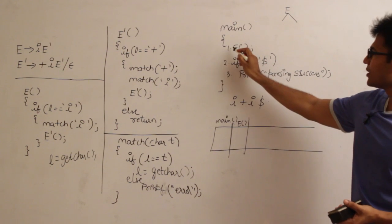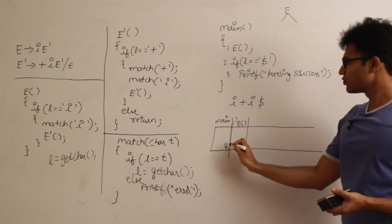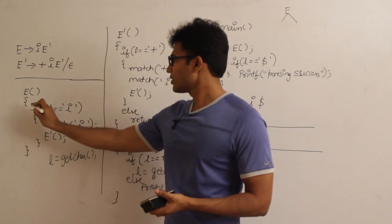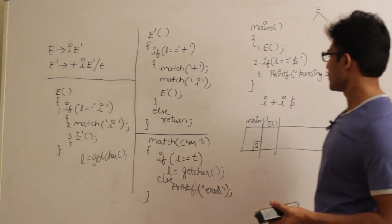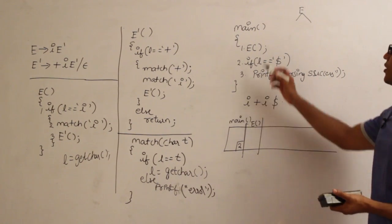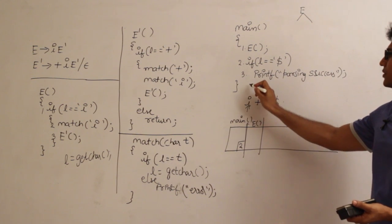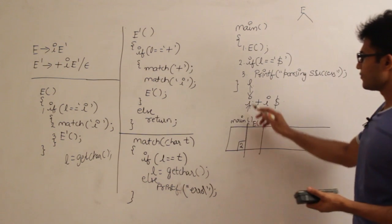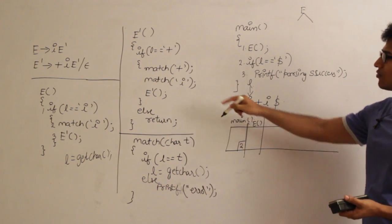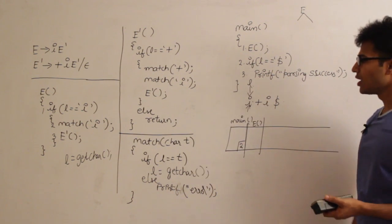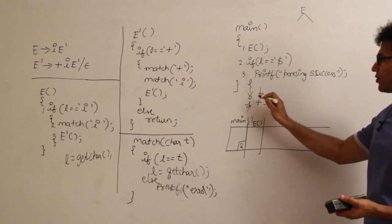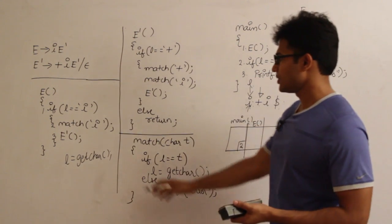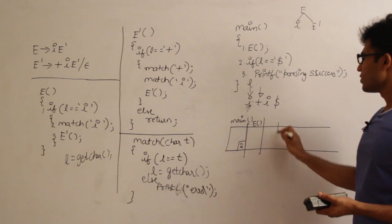Now we go to function E. After it returns we come back to line 2 in main. In function E, we check if L equals I. The lookahead starts at the first symbol, which is I. So L equals I — we match I and call E dash. Match increments the lookahead pointer, meaning we have taken the production IE dash. Then E calls function E dash.